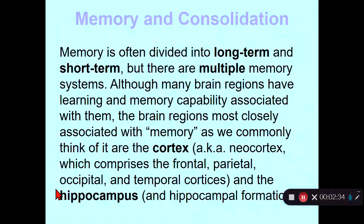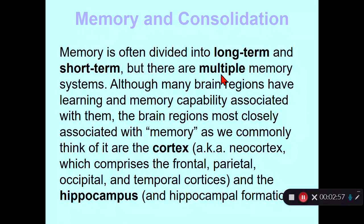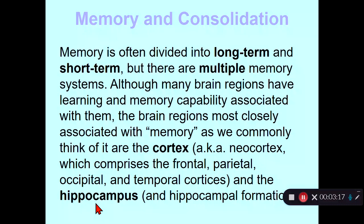Memory is often divided into long-term and short-term, and that's a property mainly of declarative memory. We have this notion that memory goes from short-term to long-term — that's the process of consolidation, which we'll discuss in detail later in this lecture. But there are multiple memory systems. What we commonly think of as memory is declarative memory, and that's mediated mainly by the cortex and the hippocampus. The hippocampus helps us detect stressful events, but it is also central in declarative memory and in the process of consolidation of declarative memory.